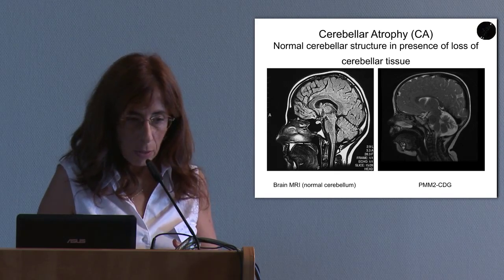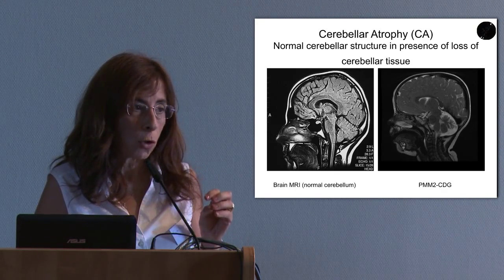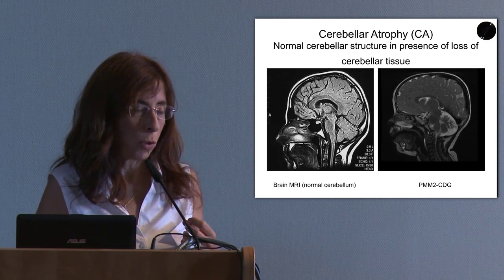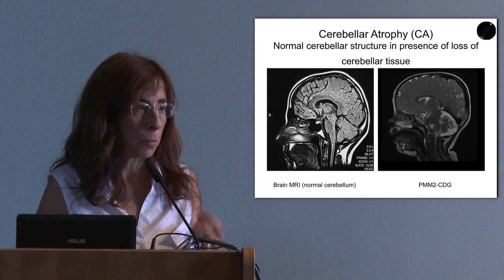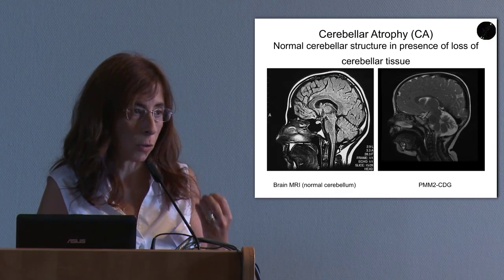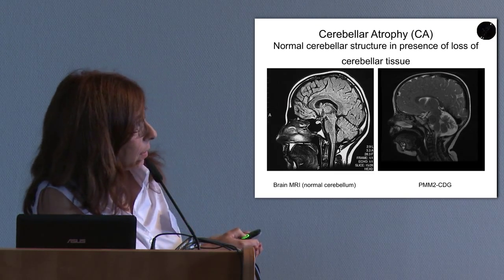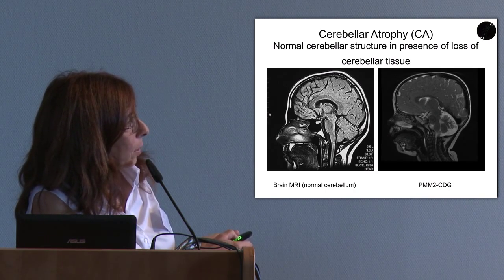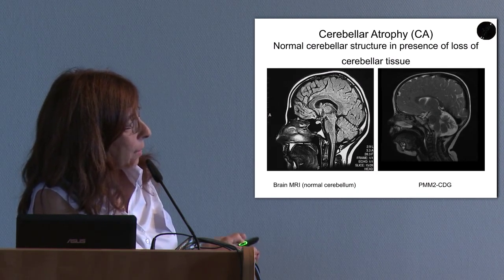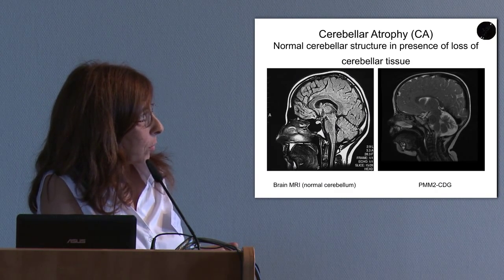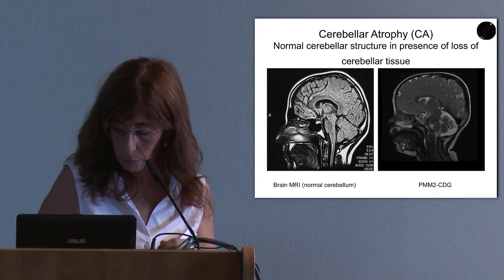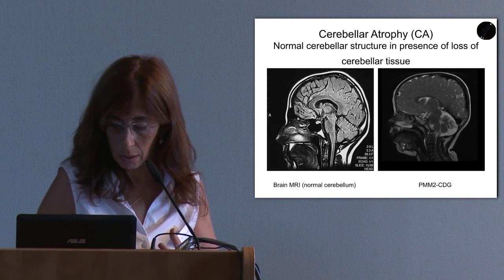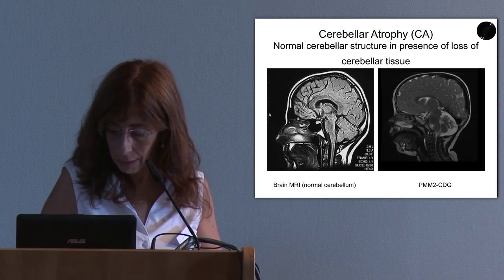The cerebellum in CDG is affected in the form of cerebellar atrophy, which means a reduction of cerebellar tissue in the presence of an initially normal cerebellar structure. As you can see here, this is brain imaging of a normal cerebellum compared to cerebellar imaging in a patient with PMM2-CDG, where you see a reduction of the cerebellar parenchyma tissue.